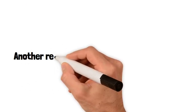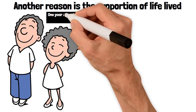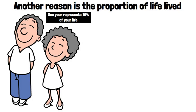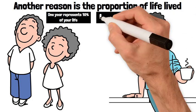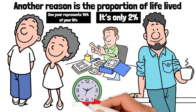Another reason is the proportion of life lived. When you're 10 years old, one year represents 10% of your life. But when you're 50, it's only 2%. This mathematical perception makes time feel shorter as we age.